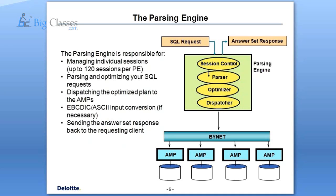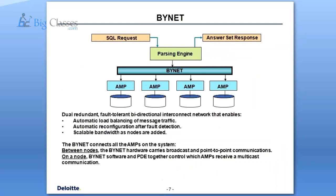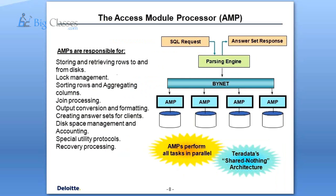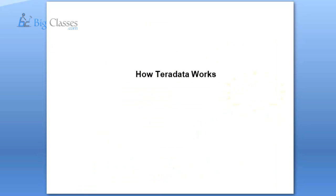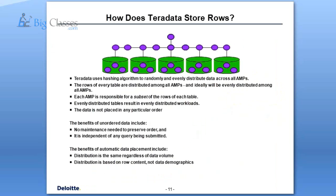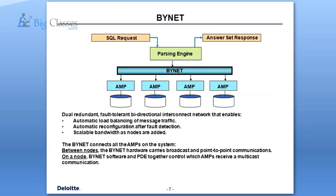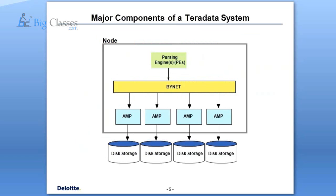With the hashing algorithm, for each row and each column the hash value will be different until the value is the same. The hash row mechanism generates unique identification keys while loading data into the table, and it will be placed across all the AMPs. AMPs are your storing mechanism — they do all the work to get the data, perform operations, and the data will be distributed across AMPs with even contribution based on the primary index.